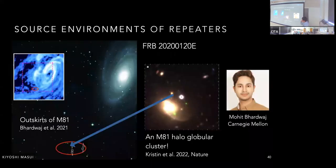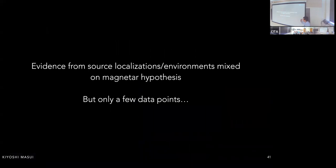More convincingly, we localized another FRB to a globular cluster in the M81 halo. Globular clusters are old stellar populations that haven't formed a star in a couple of billion years, so there's no reason to expect a magnetar there. This is a real challenge for the magnetar model. But these are still only a handful of data points, so it's hard to draw definitive conclusions.